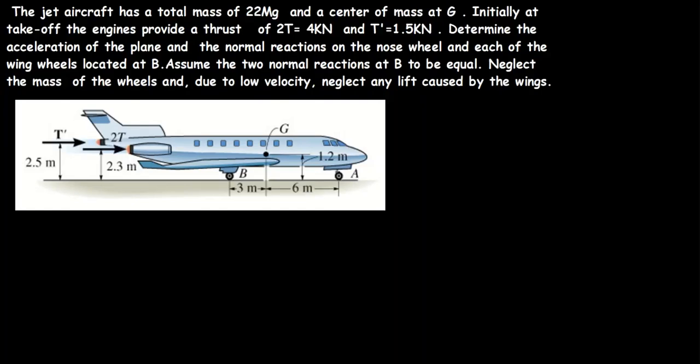Hello, welcome to this lesson. In this video we are going to solve this question I have on the screen. The question says the jet aircraft has a total mass of 22 megagrams and a center of mass at G. Initially at takeoff the engines provide a thrust of 2T equals 4 kilonewtons and T prime equals 1.5 kilonewtons. Determine the acceleration of the plane and the normal reactions on the nose wheel and each of the wing wheels located at B. Assume the normal reactions at B to be equal, neglect the mass of the wheels, and due to low velocity, neglect any lift caused by the wings.